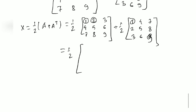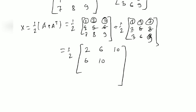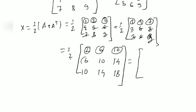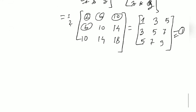To find X = ½(A + A^T), we add A and A^T element-wise and take half. Adding corresponding elements: the result after dividing by 2 gives X = [[1,3,5],[3,5,7],[5,7,9]]. This is equation 1, the symmetric matrix.